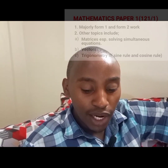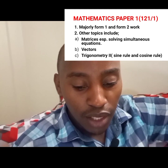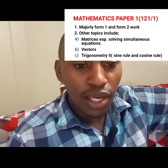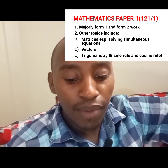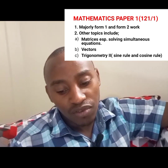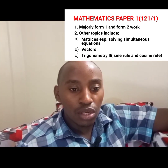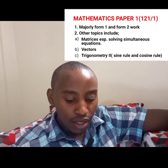The majority of the work in paper 1 comes from form 1 and 2, and we have several topics including some in form 3 like matrices. We also have solving simultaneous equations, vectors, trigonometry 2, and calculus which is in form 4.